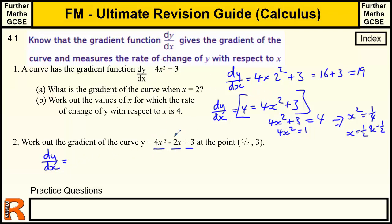For 4x squared, we reduce the power by 1 to get x, and multiply the power by the coefficient: 2 times 4 is 8, giving 8x. For the minus 2x term, the power is 1 so the 1 comes down times the negative 2 to give negative 2, and x to the power of 0 is just 1. So the gradient function is 8x minus 2.